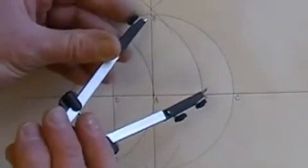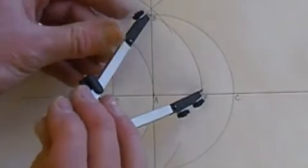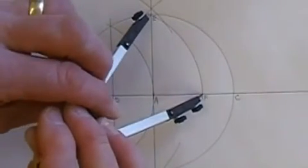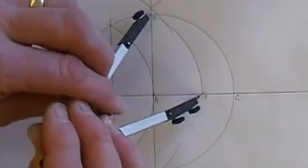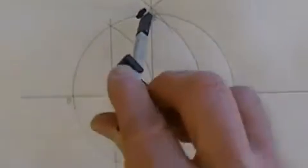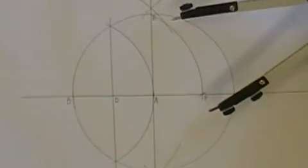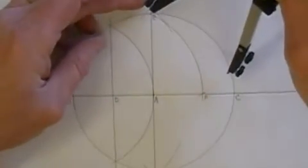Now take your compass and set it at the distance from E to F. This distance should divide your circle into five equal parts.